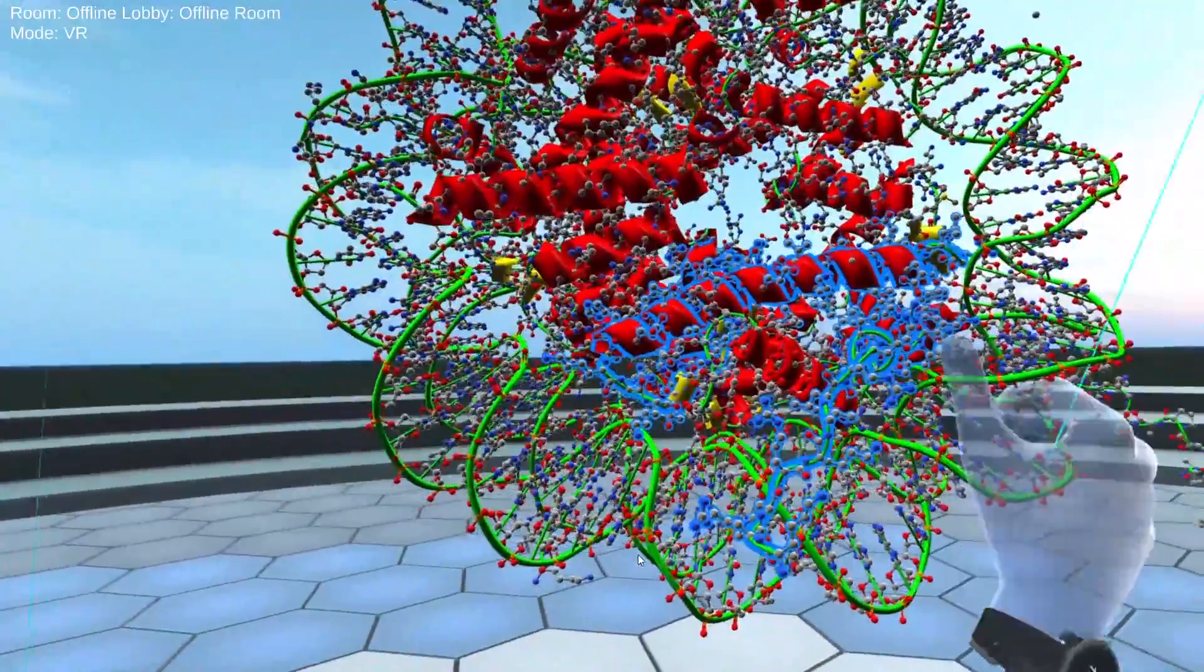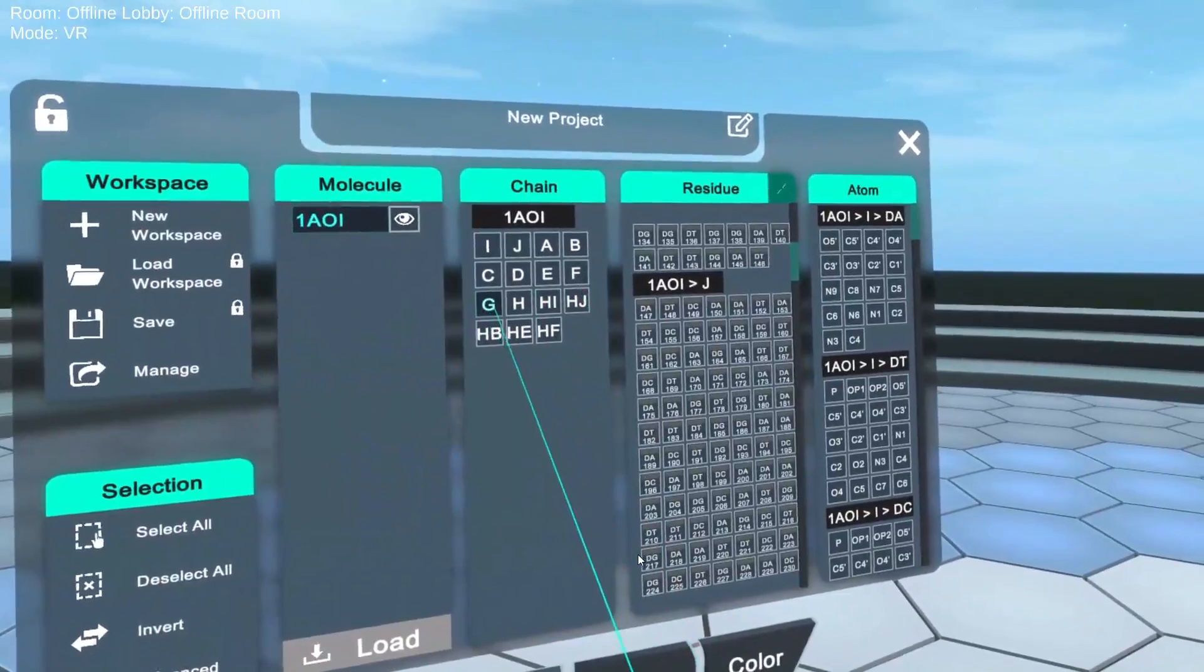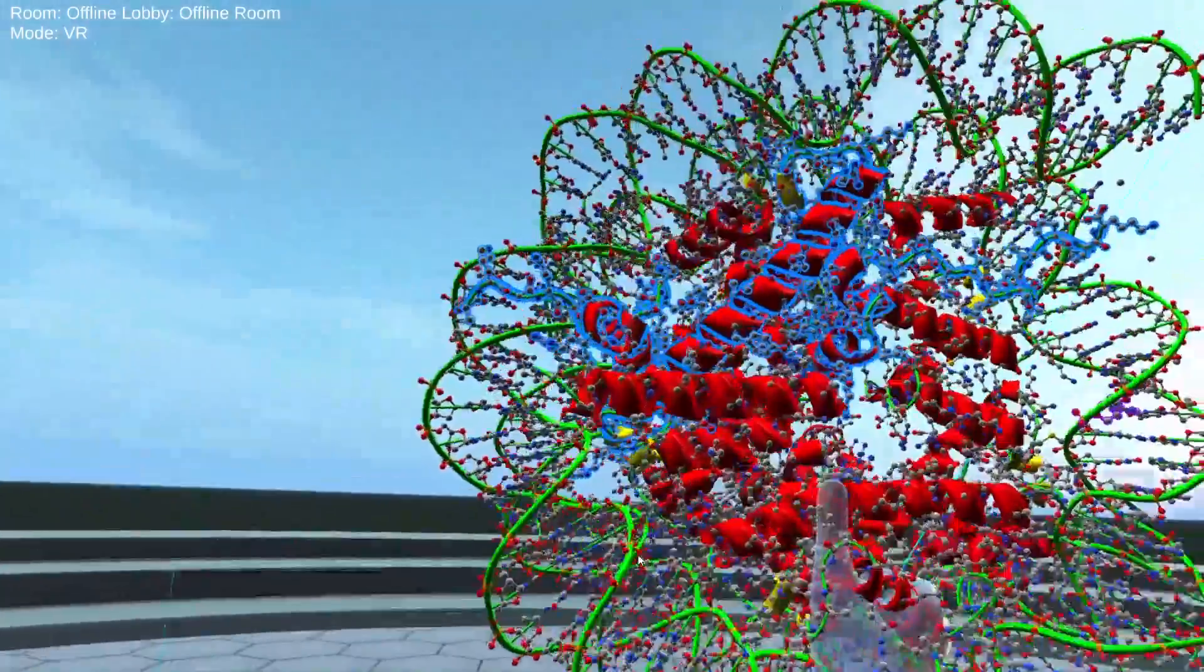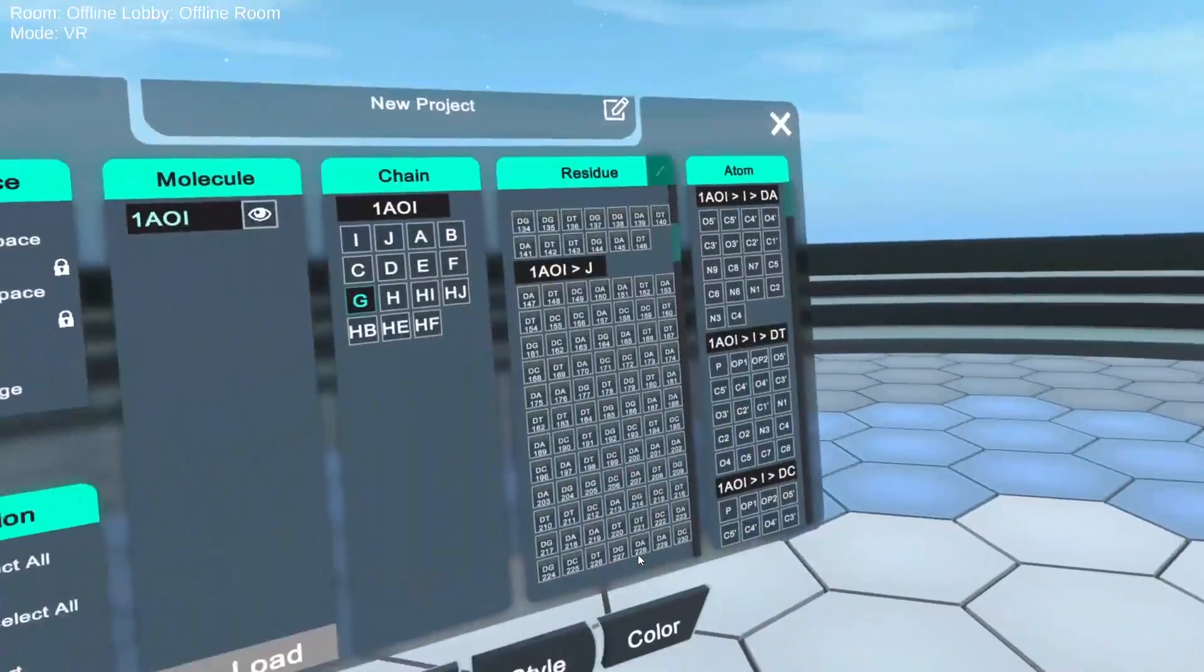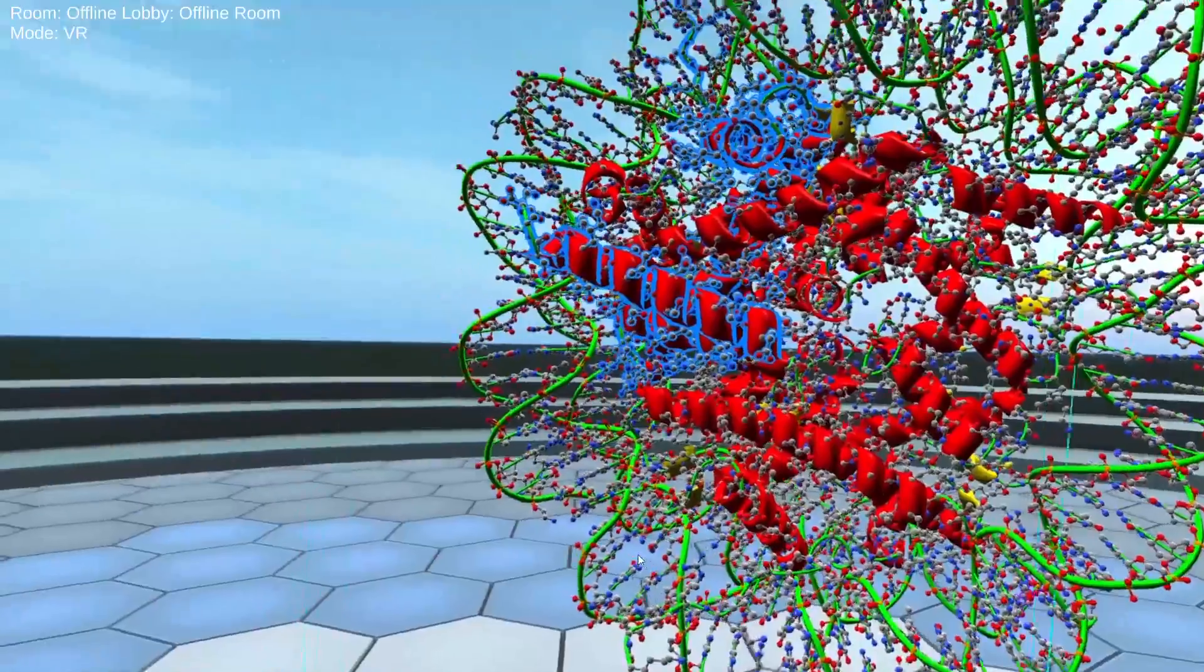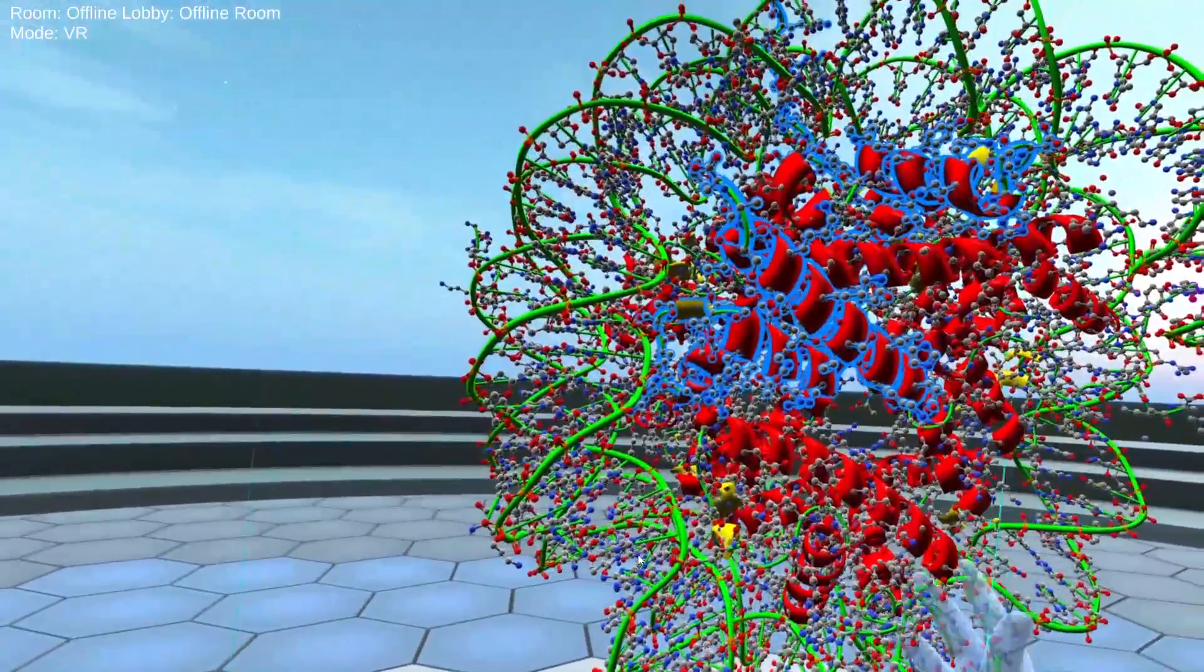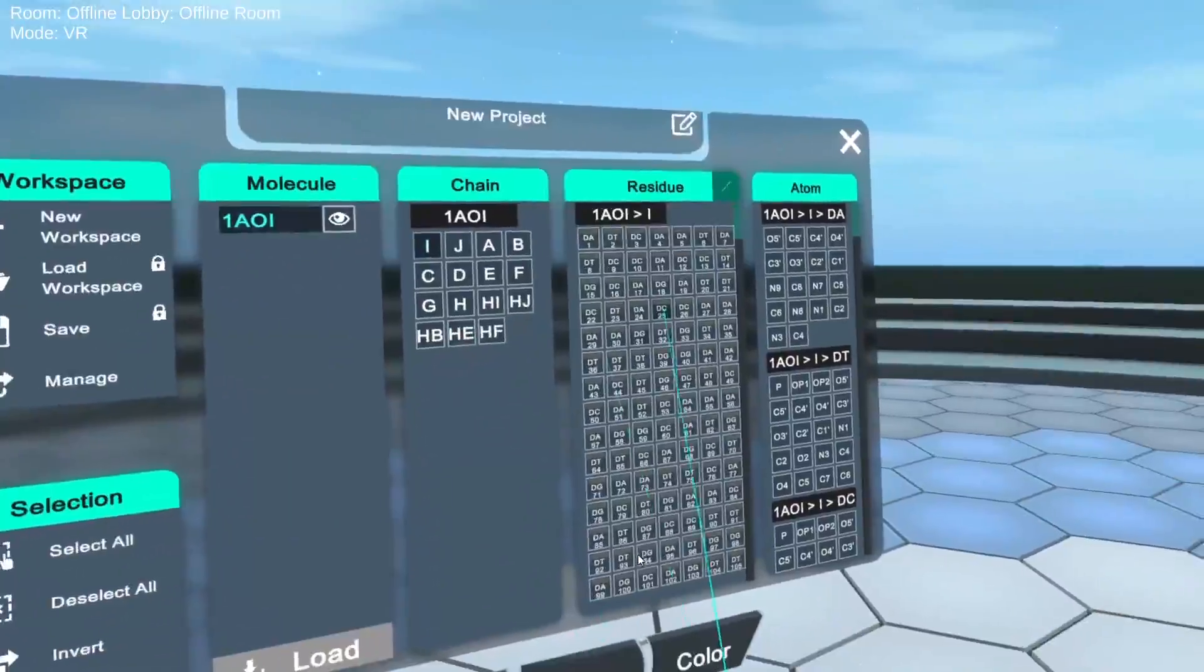We can take a look at each one continuing here. And that is essentially the structure of the octomeric disc of histone proteins. So once again, a nucleosome is just these histone proteins and then the DNA that wraps around them. And so that is the essential structure of the nucleosome.